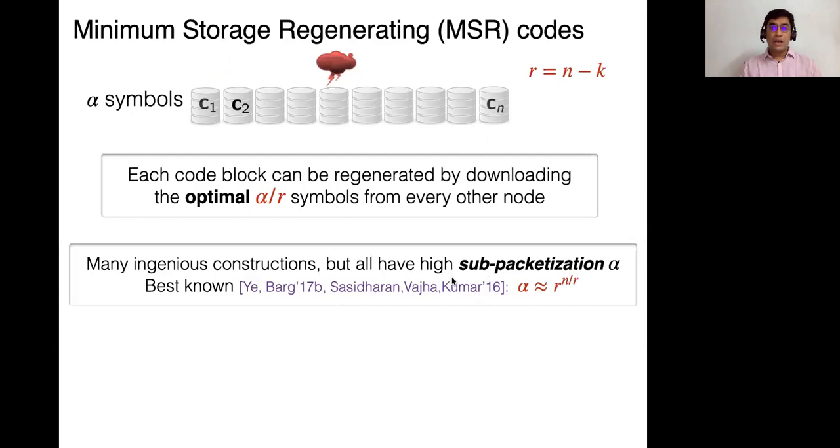And the only way to achieve this optimal bound is if you exactly download alpha by r from each of the remaining n minus one nodes. That's the only way you can achieve this. So each node stores alpha and it serves a one over r fraction of it. And the repair algorithm collects all this and then it can repair the first node C1. And the same is true when any node C_i gets lost. That's a lower bound. That's a limitation. But perhaps remarkably, there's this whole class of codes called minimum storage regenerating codes abbreviated as MSR codes, which actually give constructions which achieve this.